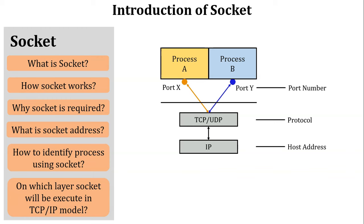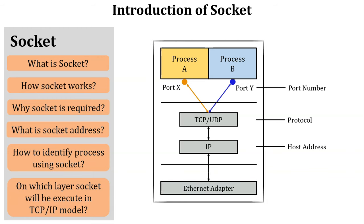Finally, the process passes through the network devices — the data link layer and physical layer. In the TCP/IP model, physical and data link layers are combined. Based on this scenario, we can say the socket is executed on the transport layer in the TCP/IP model as well as in the OSI model.